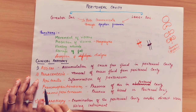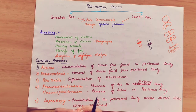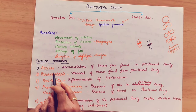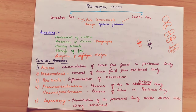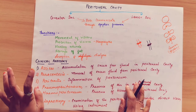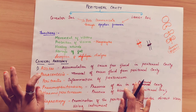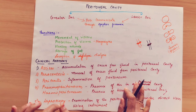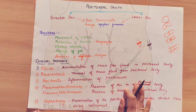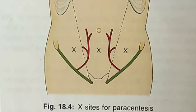Coming to clinical anatomy. The first condition is ascites — the accumulation of excess fluid in the peritoneal cavity. Causes include cirrhosis of the liver, congestive heart failure, and tuberculosis. To treat ascites, we perform paracentesis: a procedure to remove excess fluid. Two sites are used — one is the midpoint between the umbilicus and pubic symphysis, and the other is above the anterior superior iliac spine.